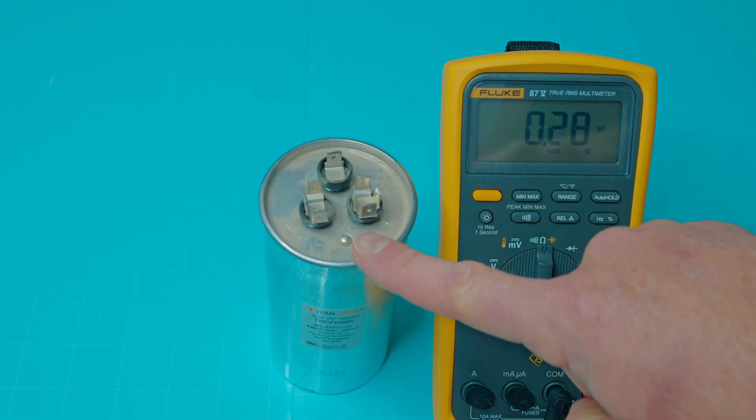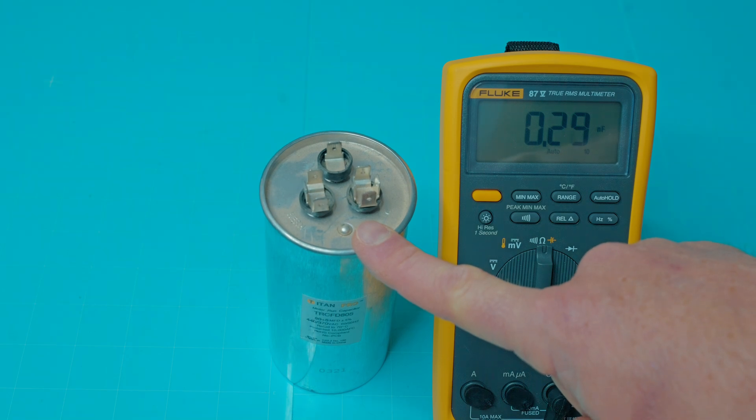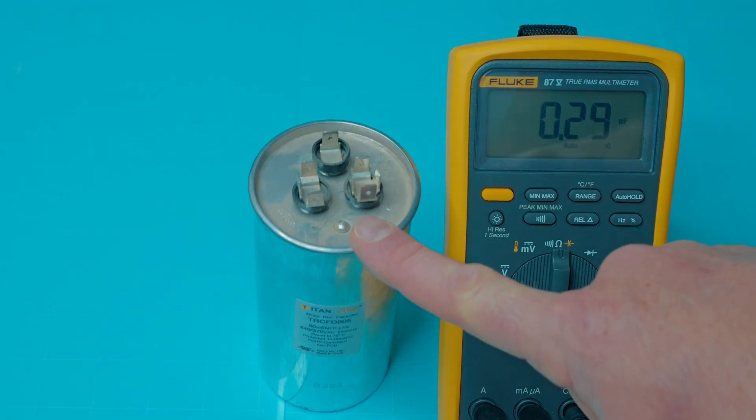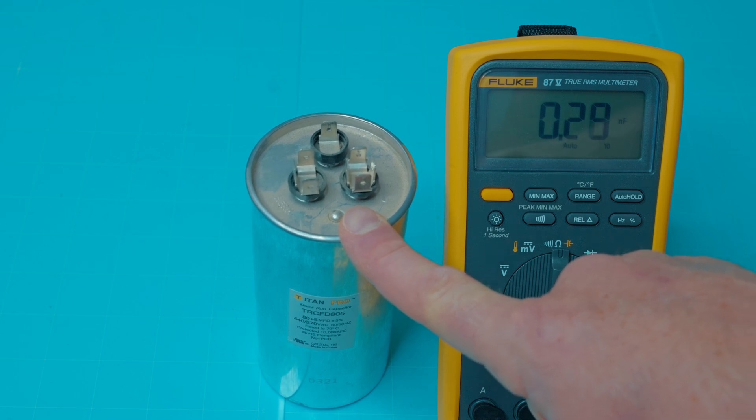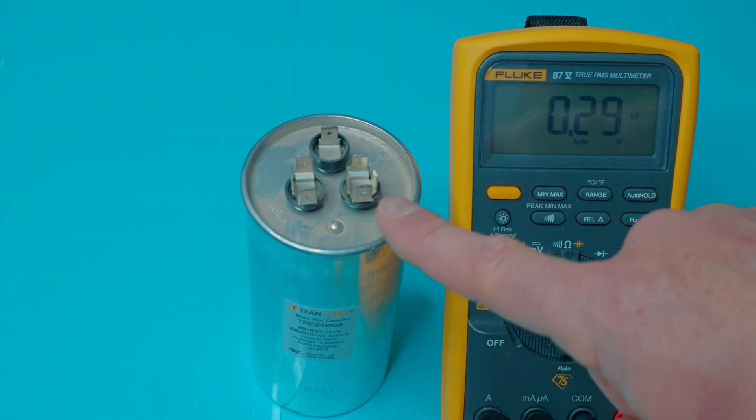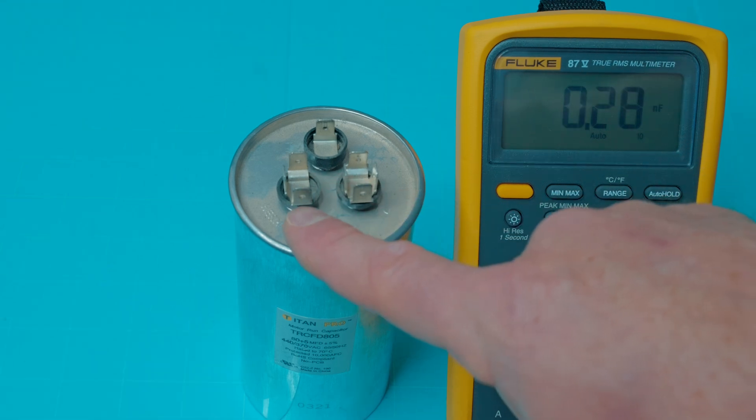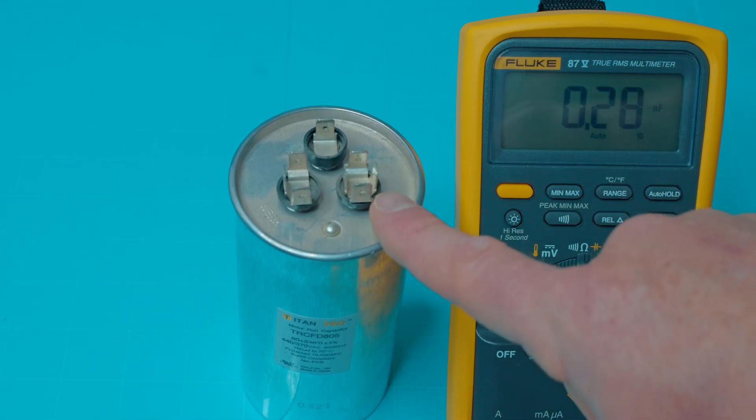Next up, I'll test a very common run start capacitor. You'll find this in your air conditioning system. Around the house, this is probably the most common capacitor that you're ever going to change. A lot of the run start capacitors will have three terminals. You're really concerned with the Herm and the C.